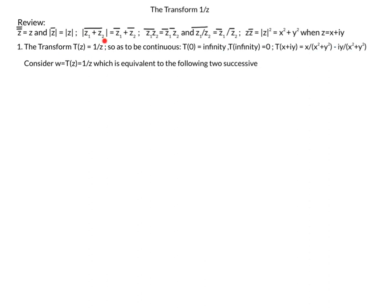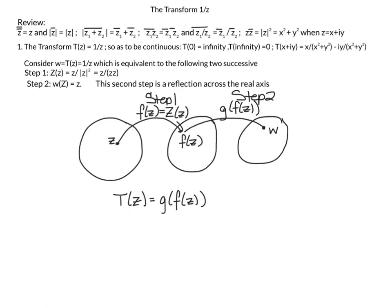We are now ready to look at the transform t of z equals 1 over z. To be continuous, we set t of 0 equal to infinity and t of infinity equal to 0. We're going to take t of z equals 1 over z and break it up into two successive transformations — mapping from the z plane, where z equals x plus iy, over to the w plane, where w equals u plus iv.